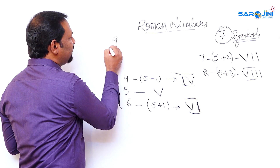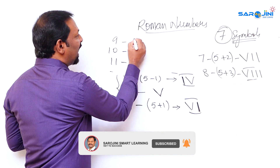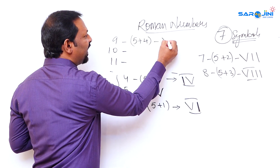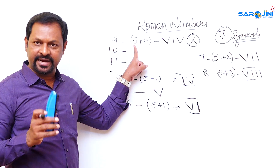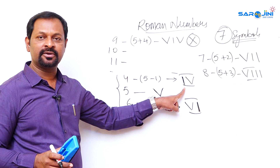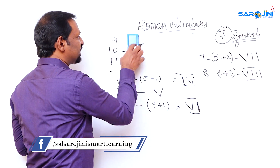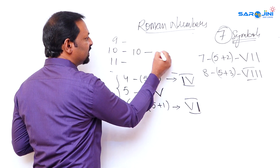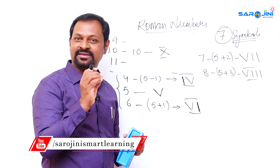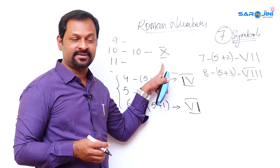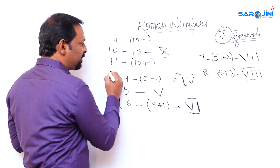Coming to nine, ten, and eleven: ten's symbol is X — we use this in school for tenth class, eleventh class, ninth class. Nine is ten minus one, so write I before X, giving IX. Eleven is ten plus one, giving XI. This is the same left/right logic as with four, five, and six.